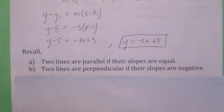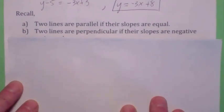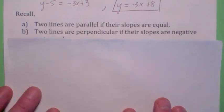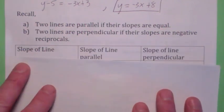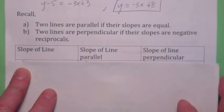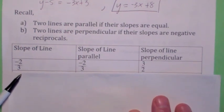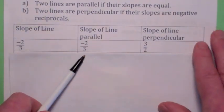Now some other information about parallel lines: parallel lines have the same slope, so their slopes will be equal. And perpendicular lines — their slopes will be negative reciprocals. So for example, if the slope of the line is negative 2 thirds, then the slope of the line that's parallel will also be negative 2 thirds.